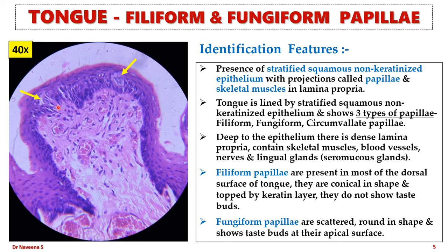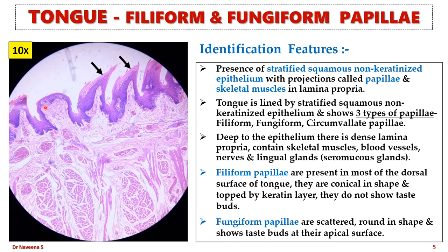Their inner end receives nerve fibers. They have a centrally placed elongated nucleus. Supporting cells or basal cells are also called stem cells. The basic difference between filiform and fungiform papillae is: filiform papillae are covered by a keratin layer and do not show taste buds, whereas fungiform papillae are round in shape and show taste buds at their apical surface.